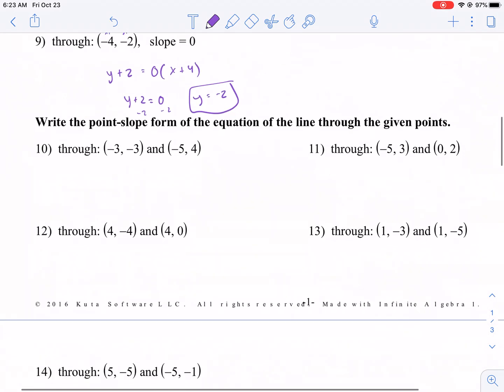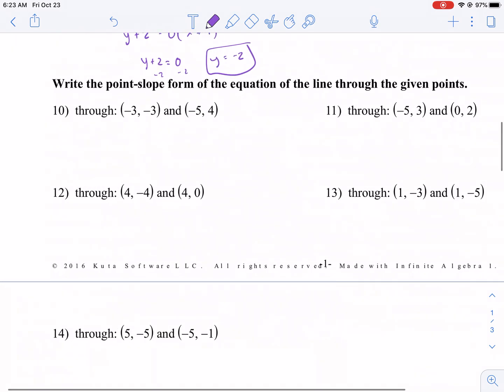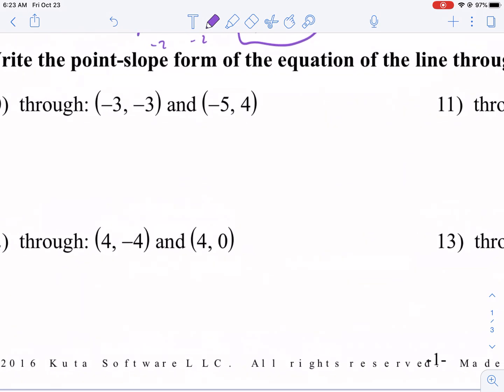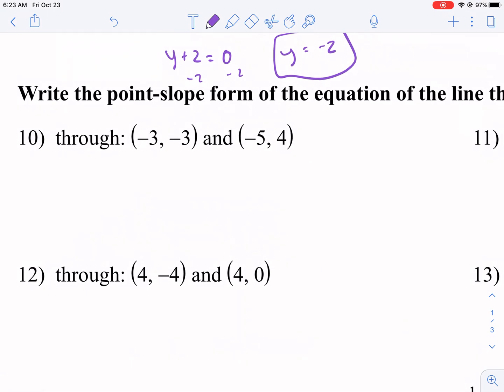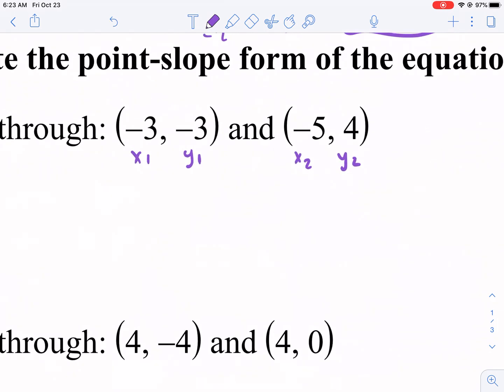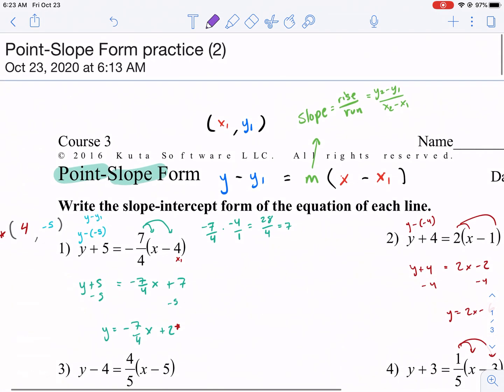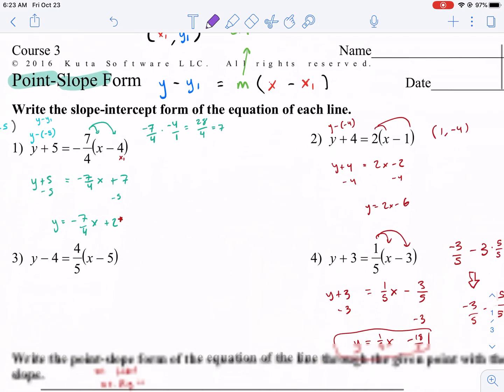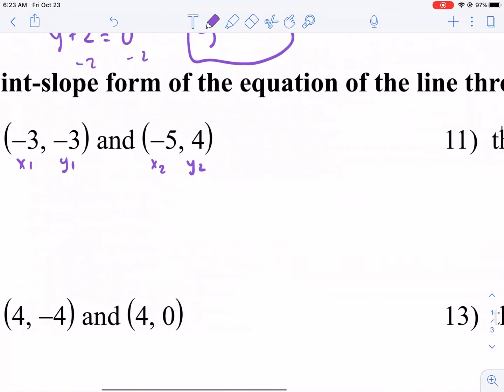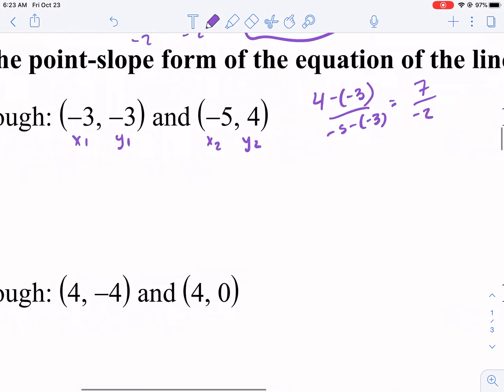Write the point-slope form of the equation of the line through the given points. This time we're not given m, and this time we're given 2 points. So what do we call x1 and y1? It doesn't matter. So we can call this one x1, y1. We can call this one x2, y2. It doesn't matter which one we call which as long as the 1s and the 2s stay together. The first thing we'll need to do is find our slope, y2 minus y1 over x2 minus x1. So we do 4 minus a negative 3 over negative 5 minus a negative 3. We get 7 over negative 2, and that is our slope.